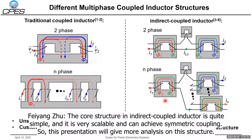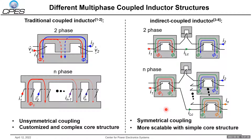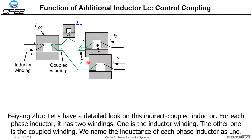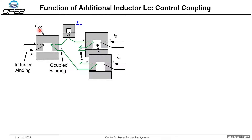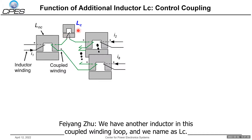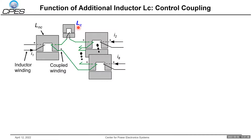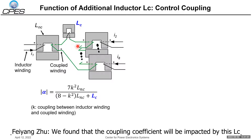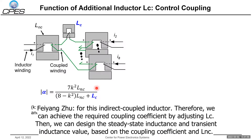Here is a detailed look at the indirect coupling inductor. For each phase inductor, there are two windings — one is the inductor winding and the other is the coupling winding. The inductance of each phase inductor is named LNC. There is another inductor in the coupling winding loop, named LC, and we found that the coupling coefficient is impacted by this LC for the indirect coupling inductor.